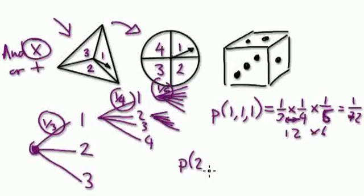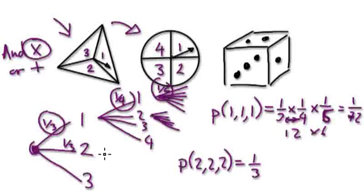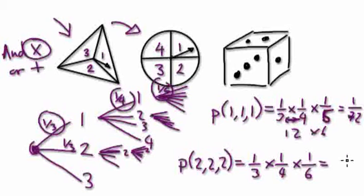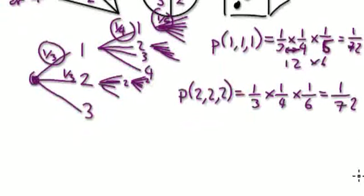Now we need the probability of 2, 2, 2. The probability of getting 2 on the spinner is 1/3. Then going down the 2 branch on the four-section spinner is 1/4. Then rolling a 2 on the die is 1/6. So again it's going to be 1/72.